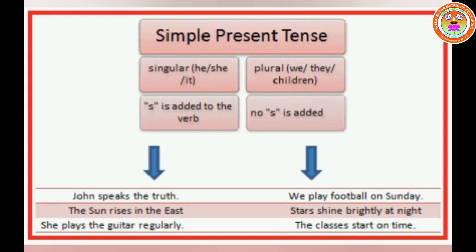Let us use the simple present tense with action verbs. Rules for making a positive sentence in simple present tense. For example, 'John speaks the truth.' 'The sun rises in the east.' 'She plays the guitar regularly.' Here, John, the sun, and she are subjects. If the subject is a singular noun or a pronoun, then the verb — speak, rise, and play — is added by -s or -es: speaks, rises, plays.